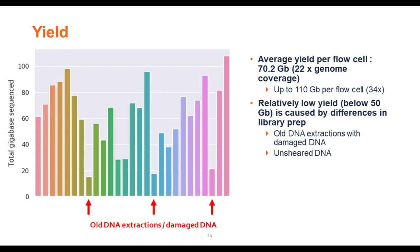A few exceptions achieved relatively low yield: three runs used older DNA extracted eight to ten years ago, which was likely slightly damaged or contained buffer components interfering with the sequencing process. Several other runs also achieved less than 50 gigabases because we used unsheared DNA. Normally we shear our DNA to approximately 10 to 20 KB fragment lengths; unsheared DNA with very long fragments resulted in lower yield. Overall, we get 70 gigabases of output on one single flow cell.